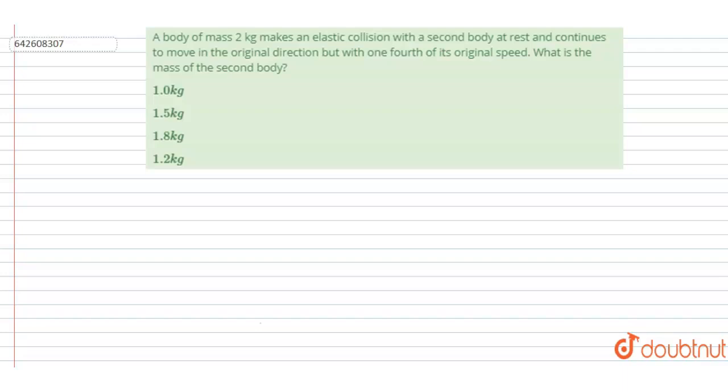makes an elastic collision with a second body at rest, continues to move in the original direction with one-fourth of its original speed. What is the mass of the second body? So it is given that the mass of the first body is 2 kg